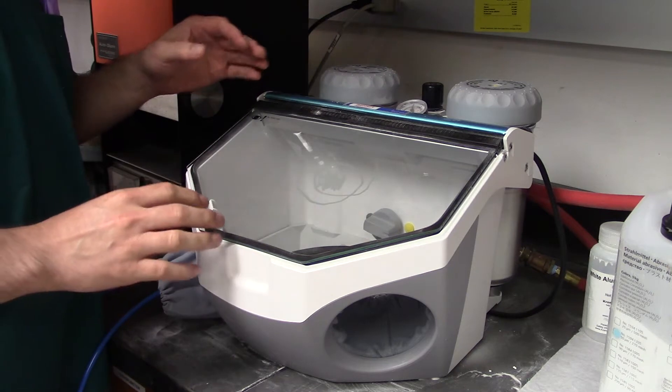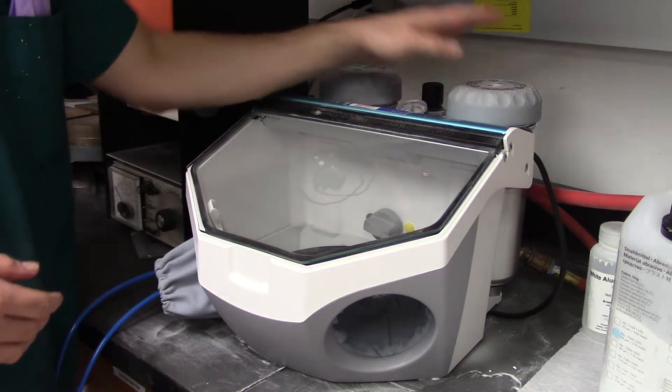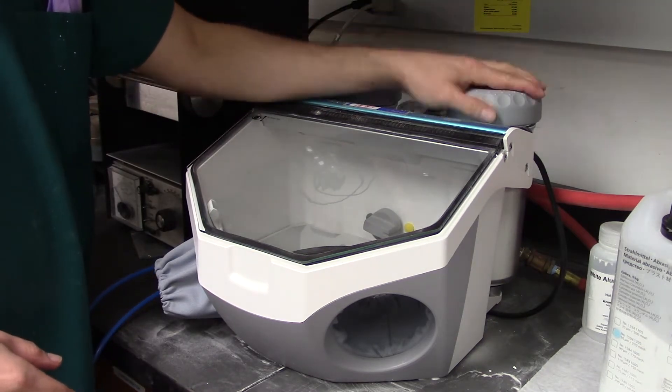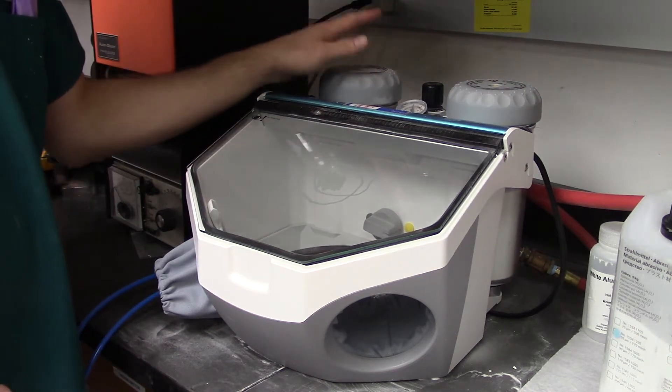There's two different types of sandblasting beads that we can use in these containers back here. So the yellow one on the top, you can't see it, but it says GL, and that means it's for glass beads. And the green one is for alumina particles.